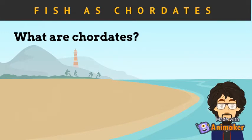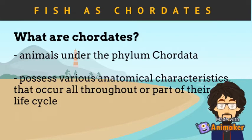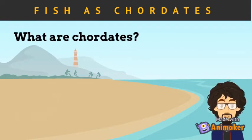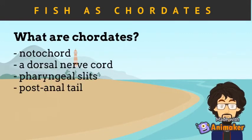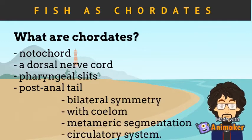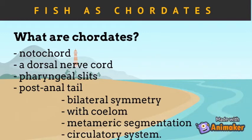What are chordates? Chordates are animals under the phylum Chordata. Organisms under this phylum possess various anatomical characteristics that appear all throughout or part of their life cycle. The characteristics of chordates include notochord, a dorsal nerve cord, pharyngeal slits, and post-anal tail. Aside from that, they also exhibit bilateral symmetry with coelom, metameric segmentation, and circulatory system.